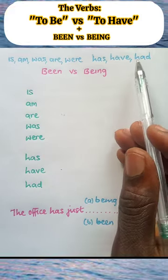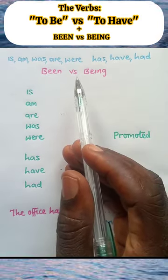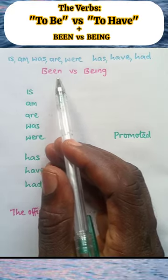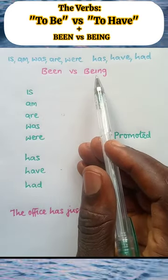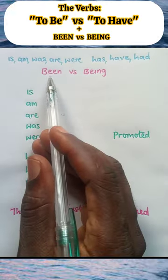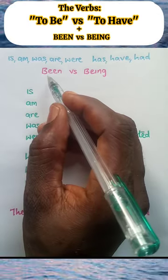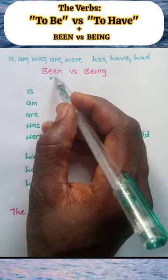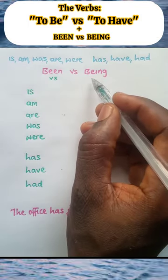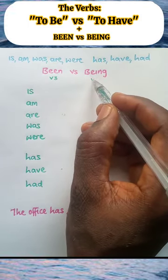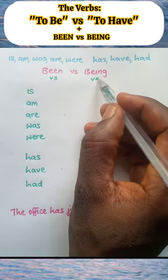While down here we have the third set, being versus been. The verb been is a past participle verb. It is a verb three, past participle verb. While being is a present participle verb, also called verb four.